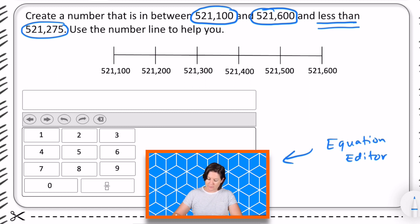It says create a number that is in between 521,100, which is right there, and 521,600, which is right there. So the entire number line is right there. And less than 521,275. So where would that be? Well that would be right about here because this would be 521,250. So in between those two would be 521,275.